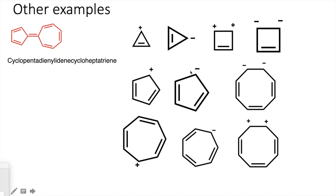This one has only four pi electrons — it will be anti-aromatic. This one has six pi electrons — two, two, two — it is aromatic. This one with six, eight, or ten pi electrons is aromatic. The tropylium cation with six pi electrons is aromatic. This one with eight pi electrons is anti-aromatic, and this one with six pi electrons is aromatic.